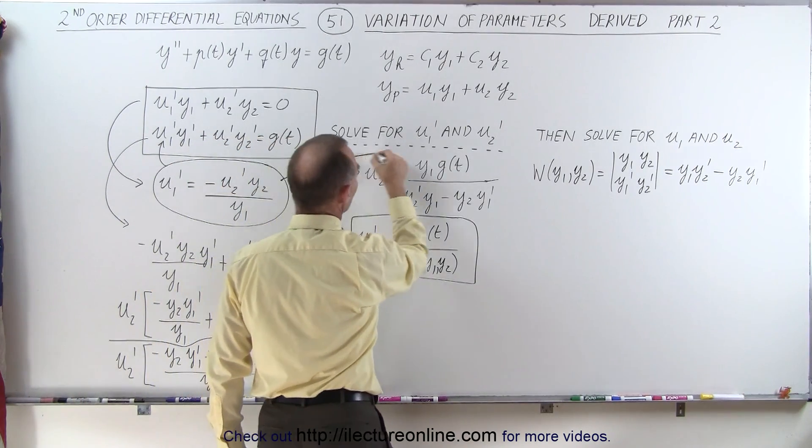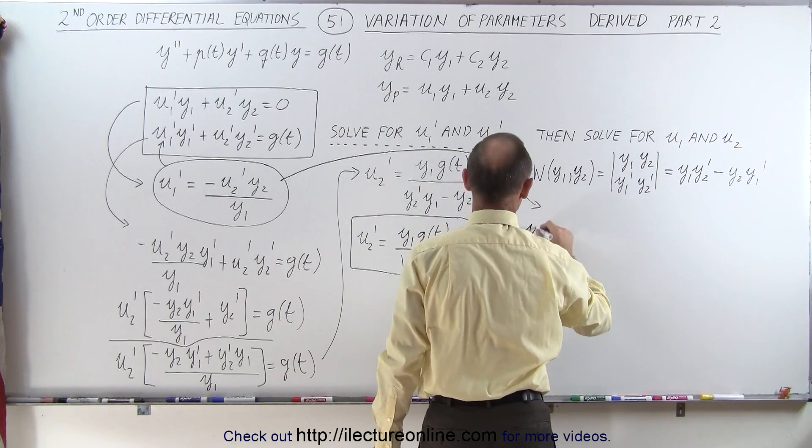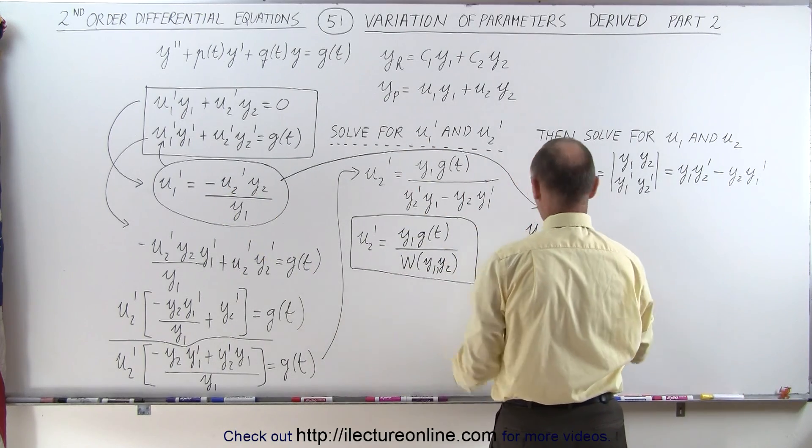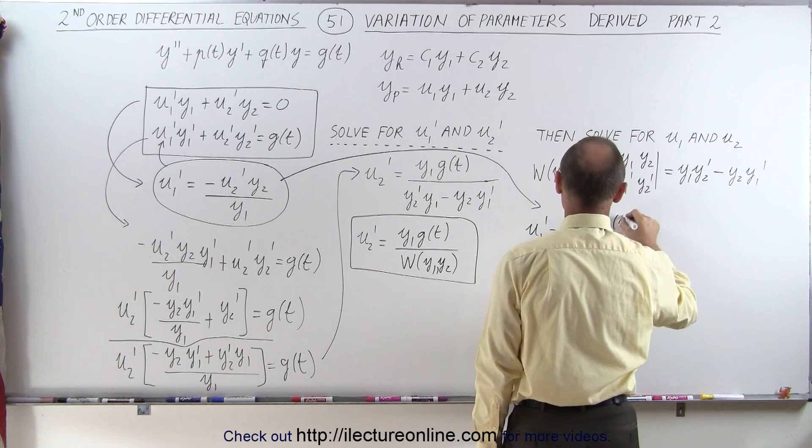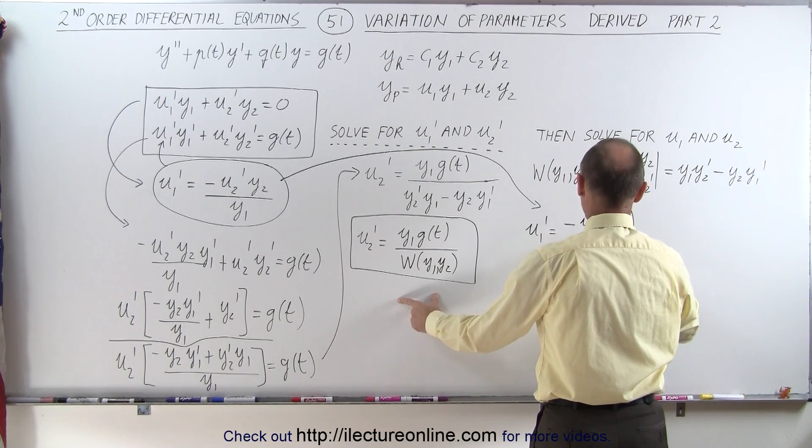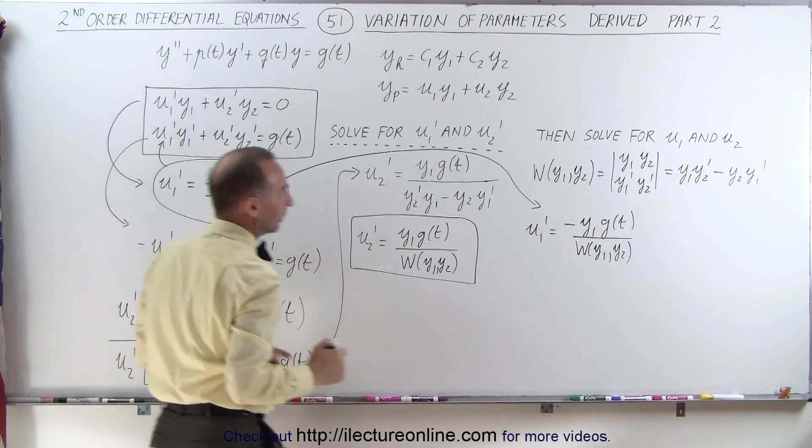So we'll take this equation over here, and now we can write that u1' is equal to the negative of u2', which is this. So the negative of y1 g of t divided by the Wronskian of y1 and y2. Of course, I also have to multiply that times y2 over y1.